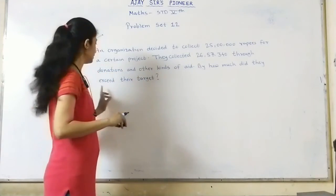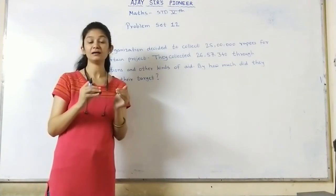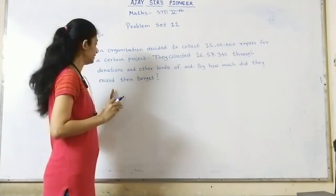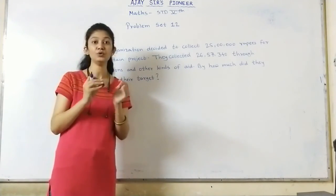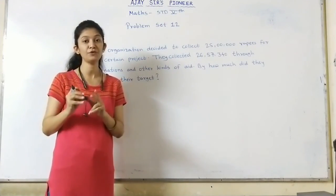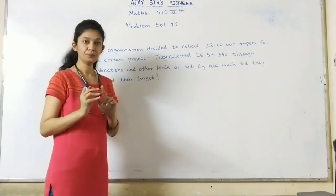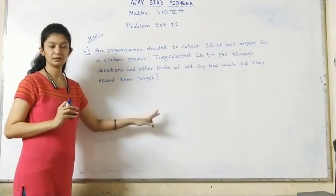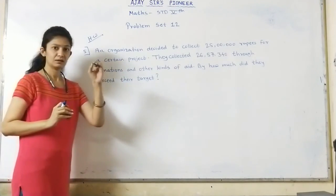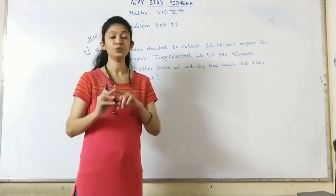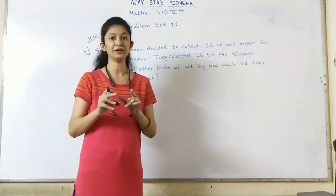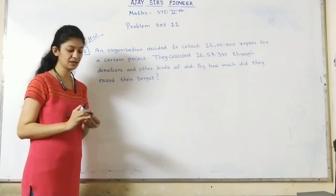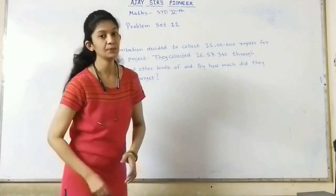Now our main question: By how much did they exceed their target? That means they collected more than 25 lakh. By how much did they exceed their target? How much extra amount did they collect? Write the solution first, and after subtraction make the difference. You need to write the statement, the main answer. Complete this solution and send the picture.